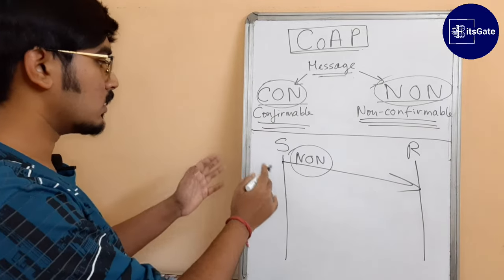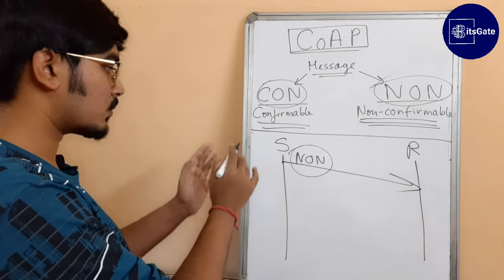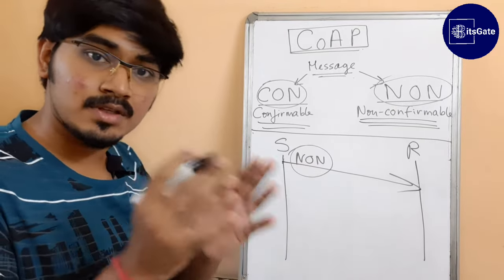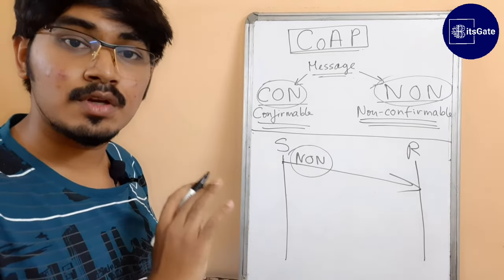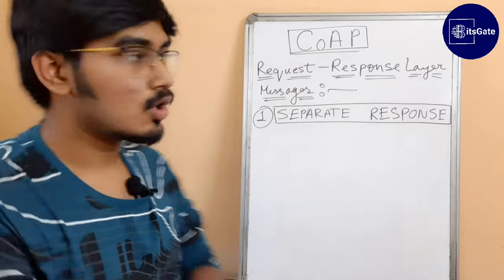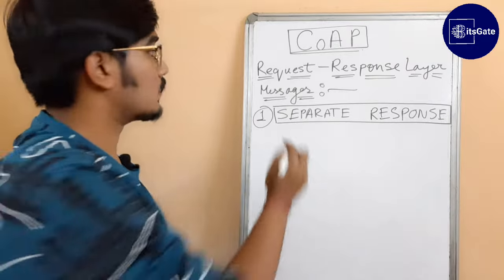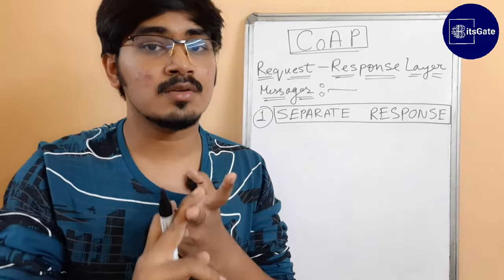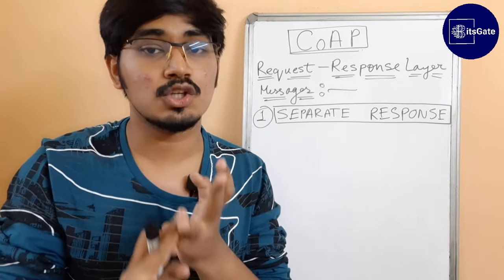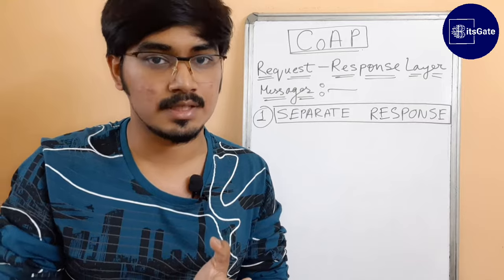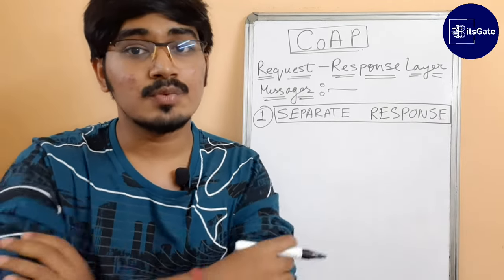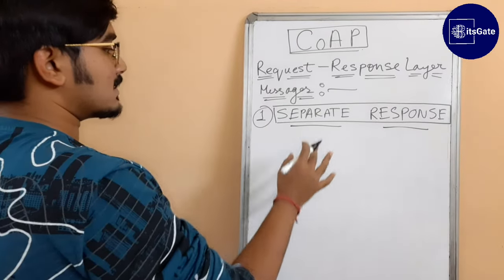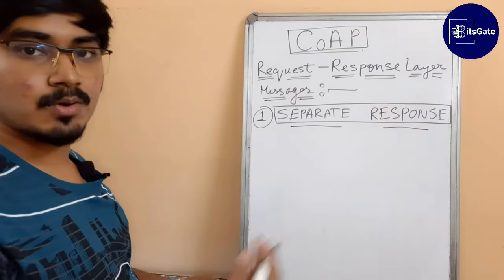In case of CON, if a CON message is sent from sender to receiver, the receiver will confirm successful receipt. In case of a NON message, the receiver will not confirm. CoAP has three types of request-response layer messages: the first is the Separate Response technique, the second is the Piggyback technique, and the third is the Non-confirmable Request-Response technique.